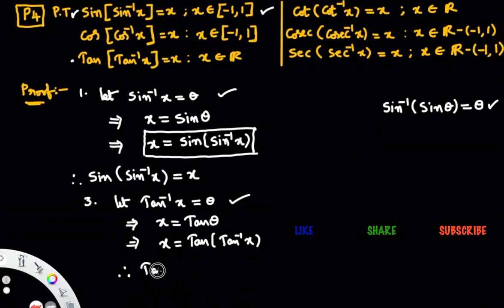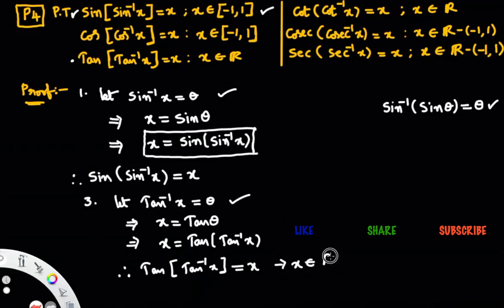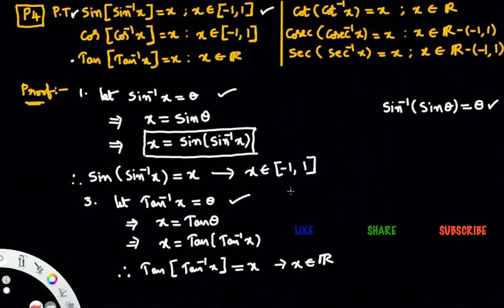Therefore, tan of tan inverse x equals to x. Observe: this result holds good when x is any real number. But sin of sin inverse x equals x holds good only when x belongs to the closed interval minus 1 to 1. This is a very useful result and a very easy proof. Similarly, please try the remaining parts and you will get the solution easily.